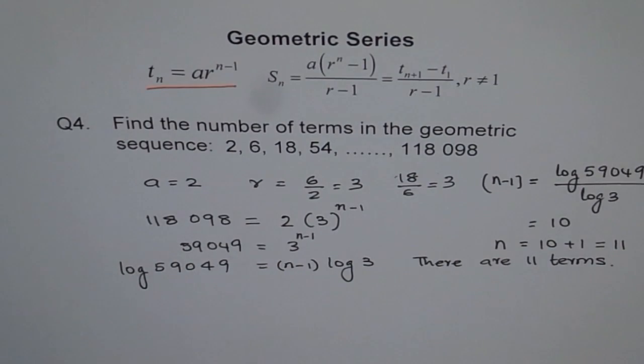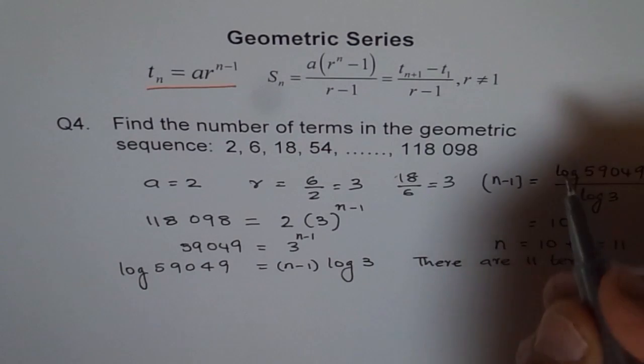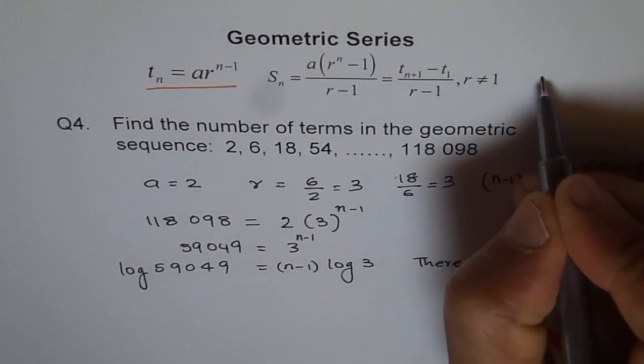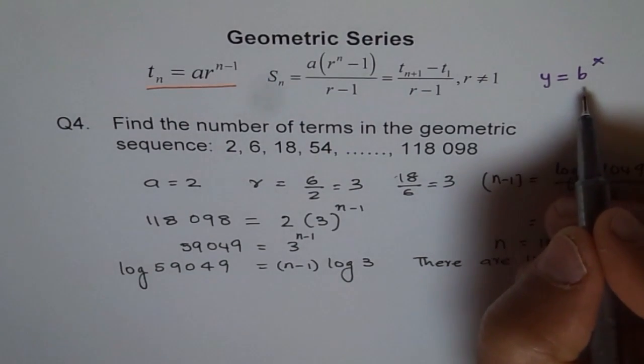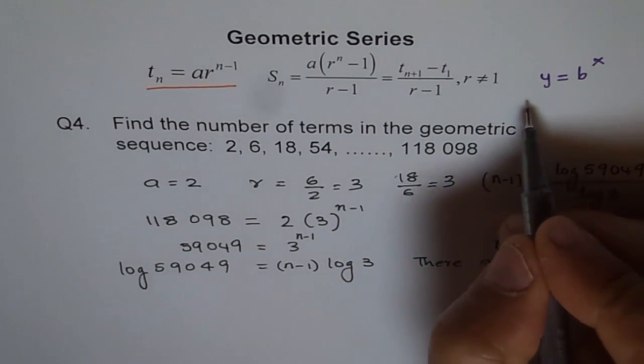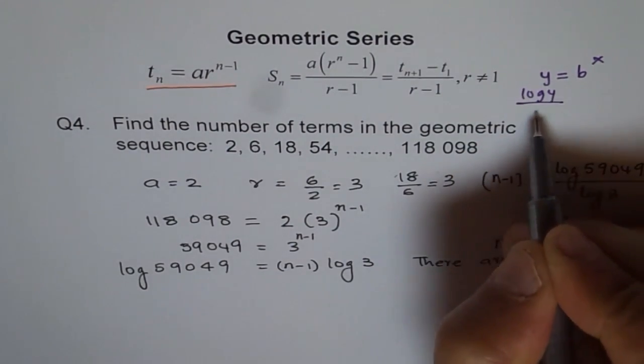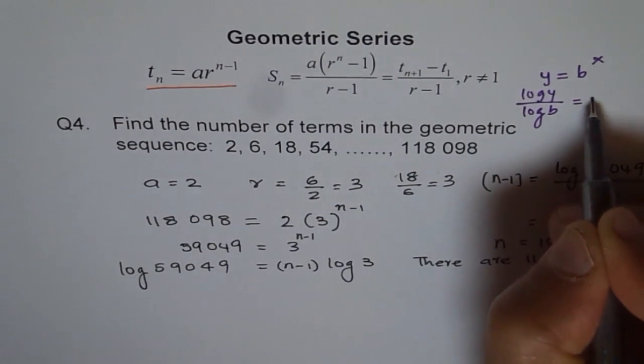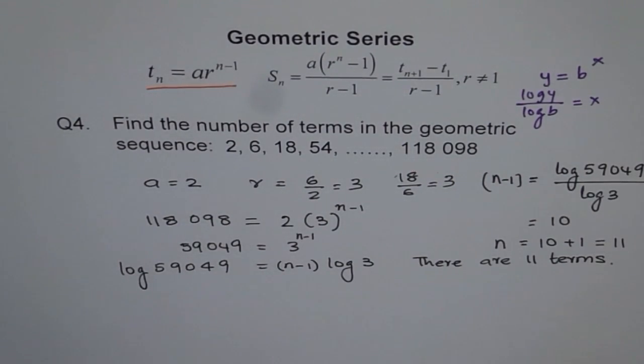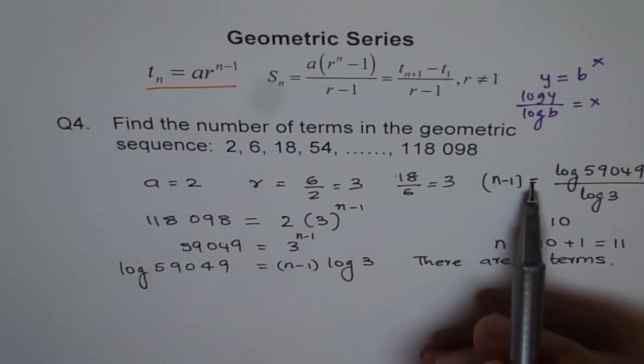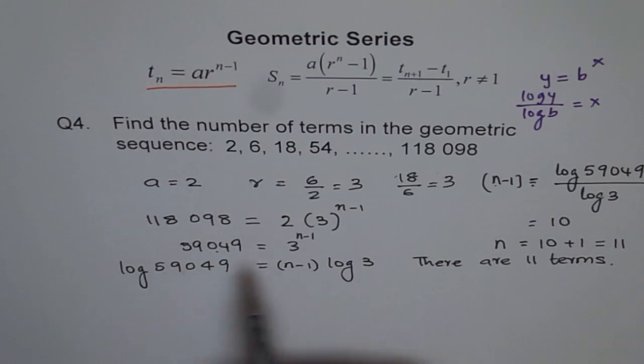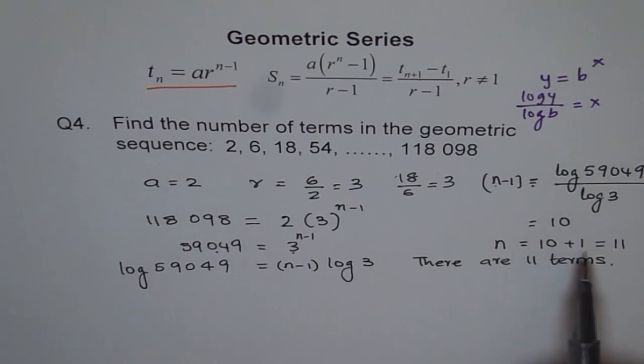So let me write down this formula here for log also. Let us say we have y equals to b to the power of x. Then we take log both sides and what is x equals to? So we say log of y divided by log of b equals to x. So that is a very simple formula which you can always use. x in our case was n minus 1. Do you see that? So we get n minus 1 equals to log of y, which is this value, divided by the base, 3. So simple as that. So you can straight away use this formula. You don't even have to go to that step. Use this formula and get your result.